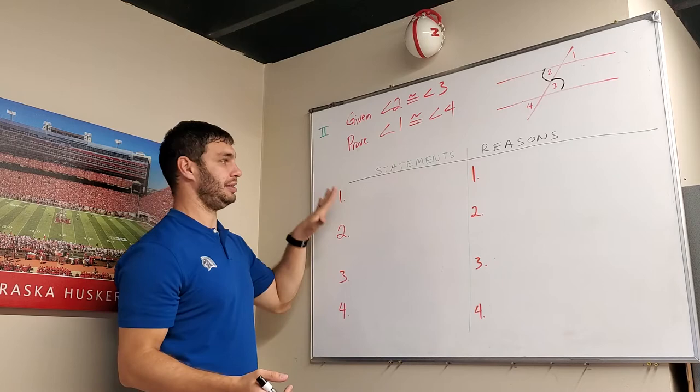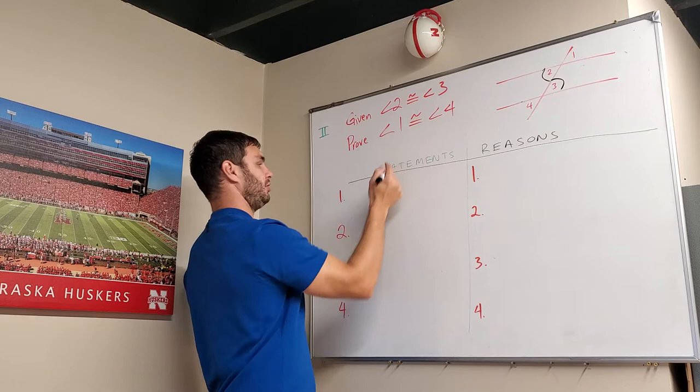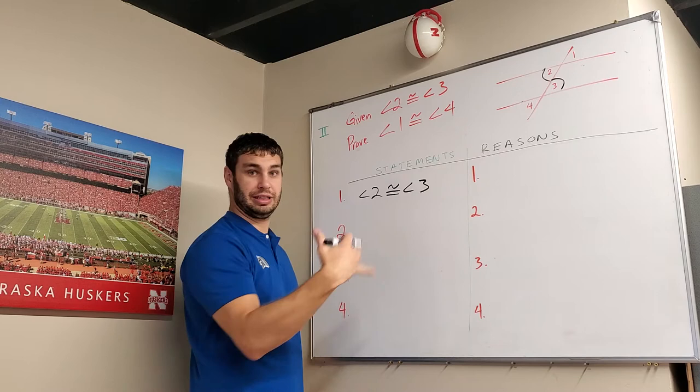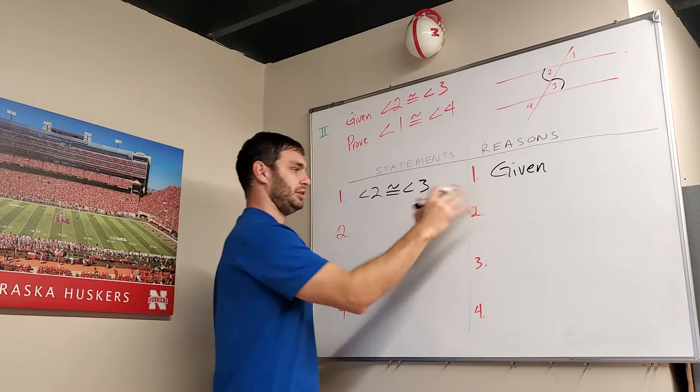First off, the first statement I'm given is angle 2 is congruent to angle 3. That's one of our freebies. And the reason for that freebie, the first one, is our given. You can always start with a given.